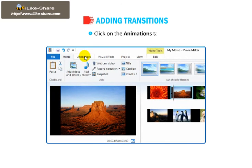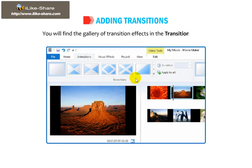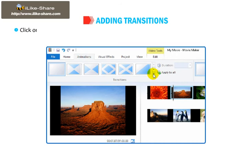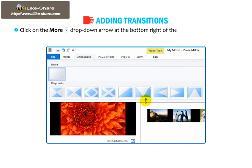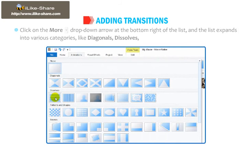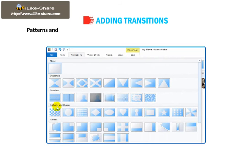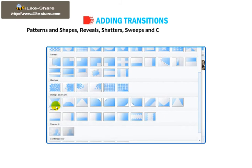Click on the Animations tab. You will find the Gallery of Transition Effects in the Transitions group. Click on the More drop-down arrow at the bottom right of the list and the list expands into various categories, such as Diagonals, Dissolves, Patterns and Shapes, Reveals, Shatters, Sweeps and Curves, Wipes, Cinematic and Contemporary.